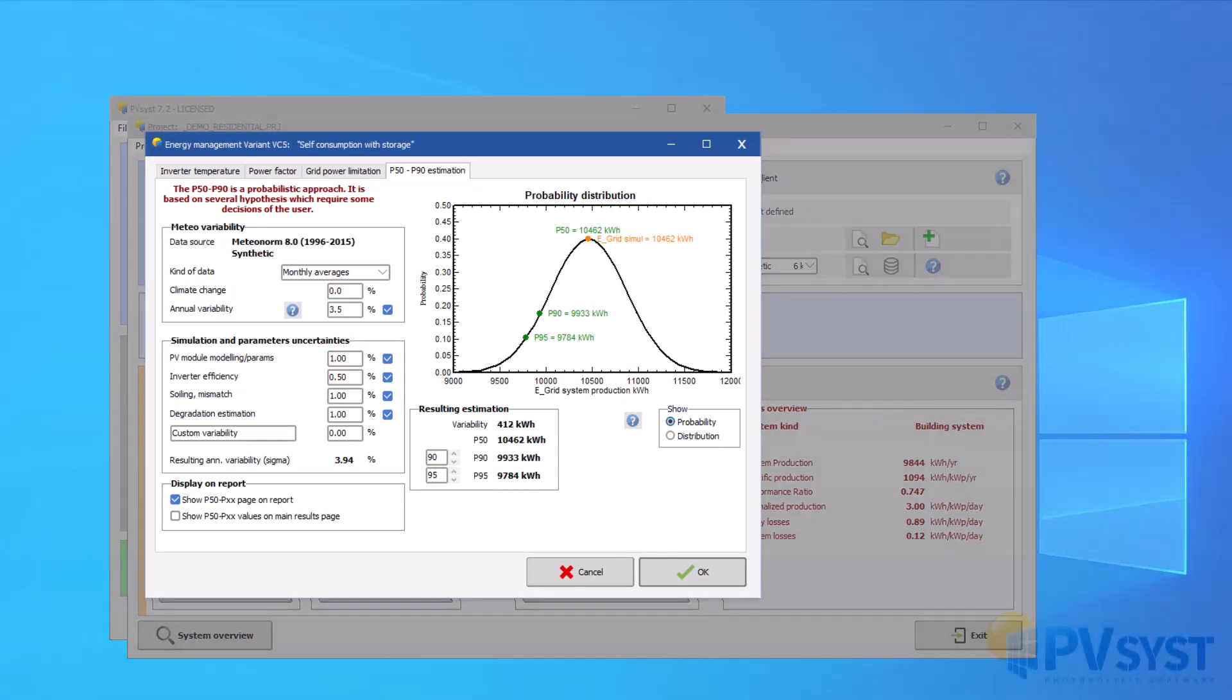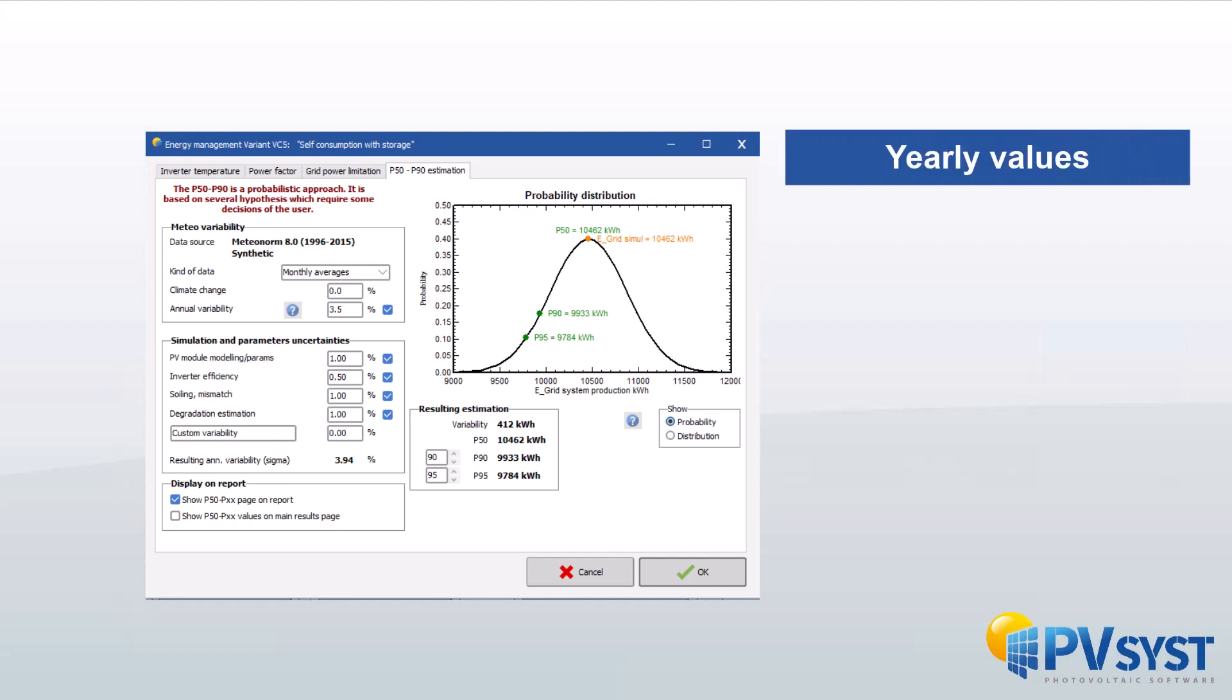The P50-P90 statistical estimations are based on yearly values. Defining P90 for hourly or daily values, or even for monthly accumulations, doesn't make sense.